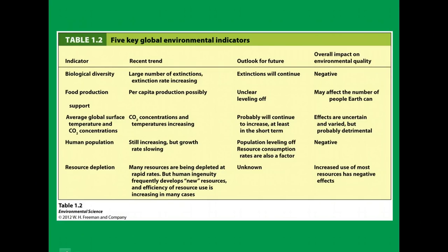There's a chart you can look at on page six of your book showing the five major global indicators — what has been happening and what the outlook is for the future. For biological diversity, for example, humans are causing a greater number of extinctions, mostly due to habitat destruction or degradation. The extinction rate is probably increasing beyond the natural rate, and the outlook is that extinctions will continue — a pretty negative impact.